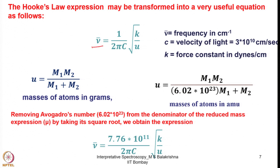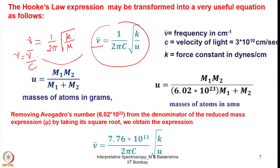We know that nu bar equals 1 over 2 pi c into square root of k by mu. This comes from nu equals 1 over 2 pi into square root of k by mu, but nu equals nu bar times c. So we simply substitute this value. Here mu equals m1 times m2 over m1 plus m2 is the reduced mass, nu bar is frequency in centimeter minus 1, c is velocity of light 3 into 10 to the 10 centimeters per second, and k is force constant in dynes per centimeter. In the simplified equation 130.3 into square root of f over mu, the force constant is in newtons per meter.